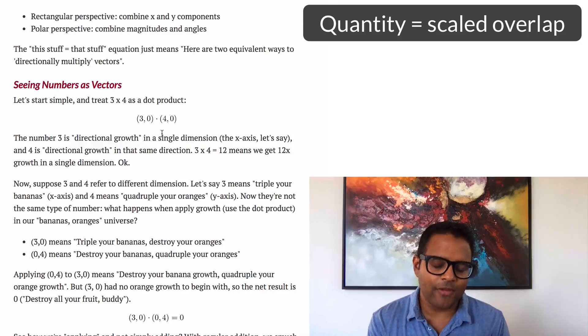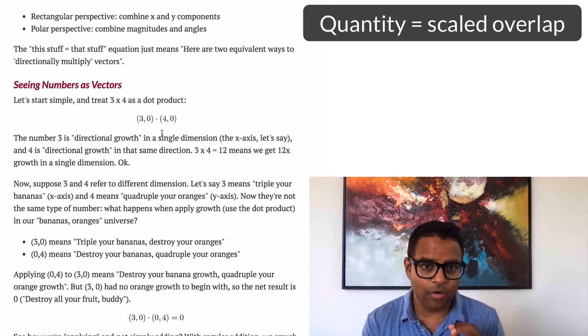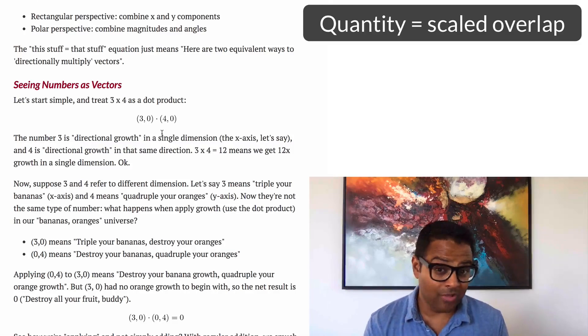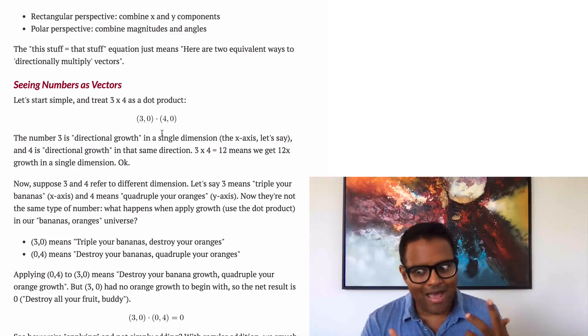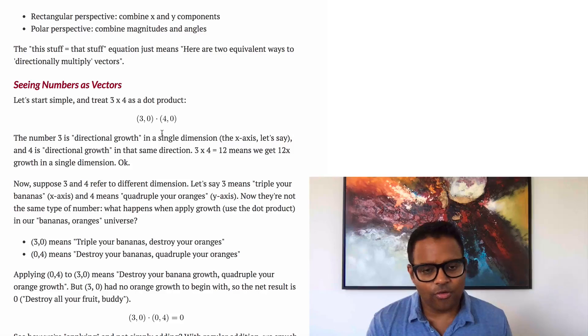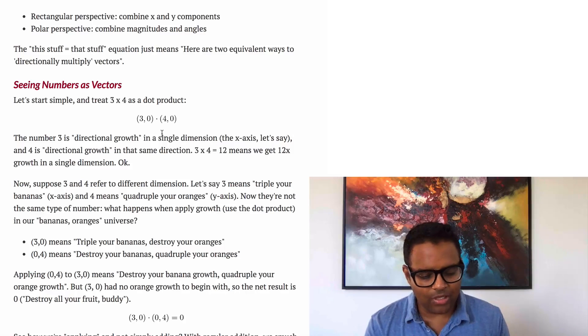So if both of the vectors were 1, it was 1,0 dot 1,0, then the max overlap would be 1. But because one of them is 3 and one of them is 4, the max overlap is actually 12. So we're basically allowing the amount of overlap to be scaled up by the size of the vectors.